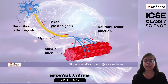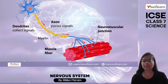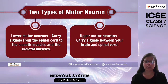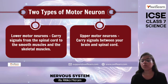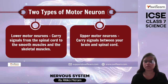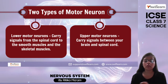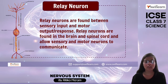Looking at the motor neuron structure, we have the axon which is used to pass the signal, and we have the neuromuscular junction connecting to the muscle fibers. Motor neurons have two categories: upper and lower. Lower motor neurons carry the signal from the spinal cord to smooth muscles and skeletal muscles, while upper motor neurons carry the signal between our brain and spinal cord.